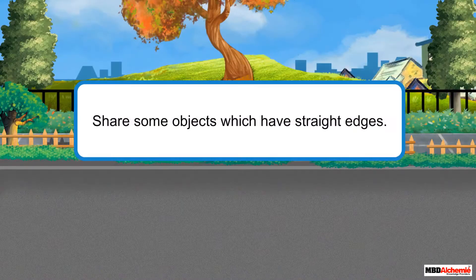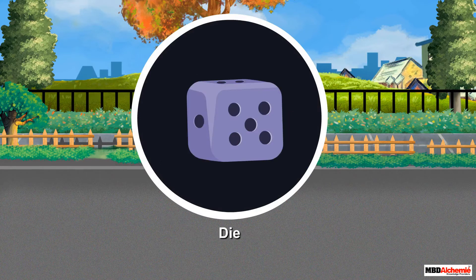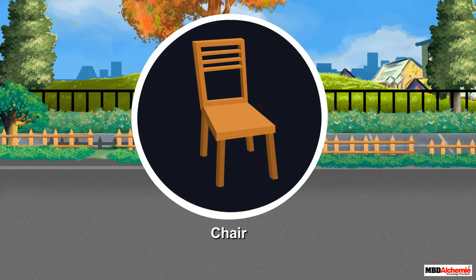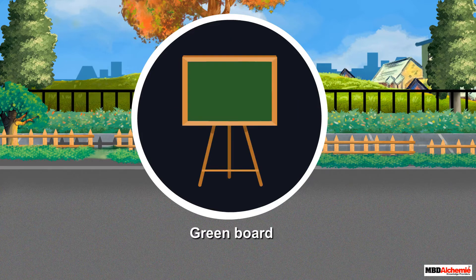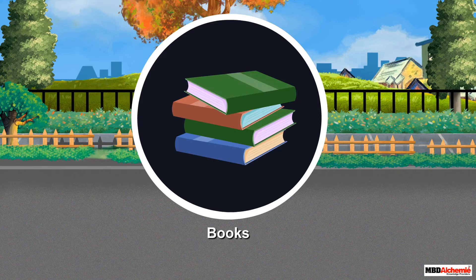Share some objects which have straight edges. A pencil box, die, top of the table, eraser, chair, a blackboard, greenboard, whiteboard, and books are a few examples of objects that have straight edges. There are many more objects where we can find straight edges.